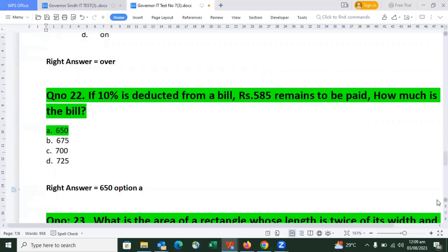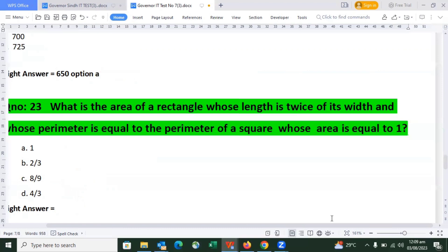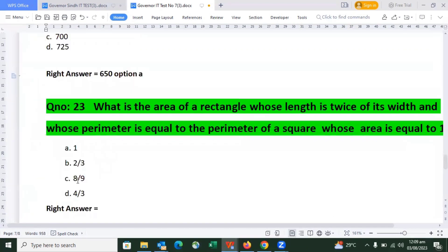The third last question is mathematics related. What is the area of a rectangle whose length is twice its width and whose perimeter is equal to the perimeter of a square whose area is 1? The right answer in the proper solution is 8 upon 9, option C.